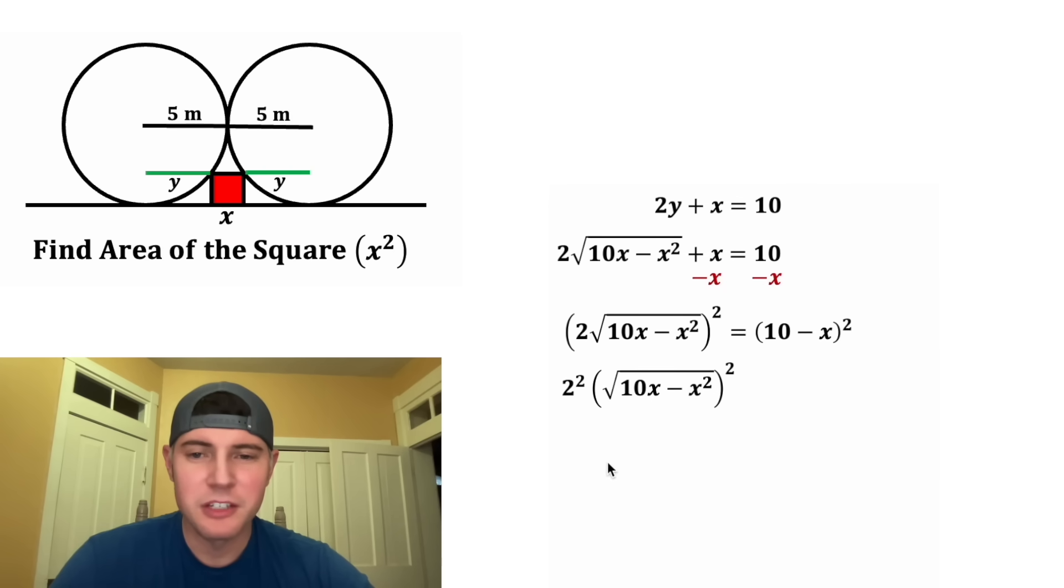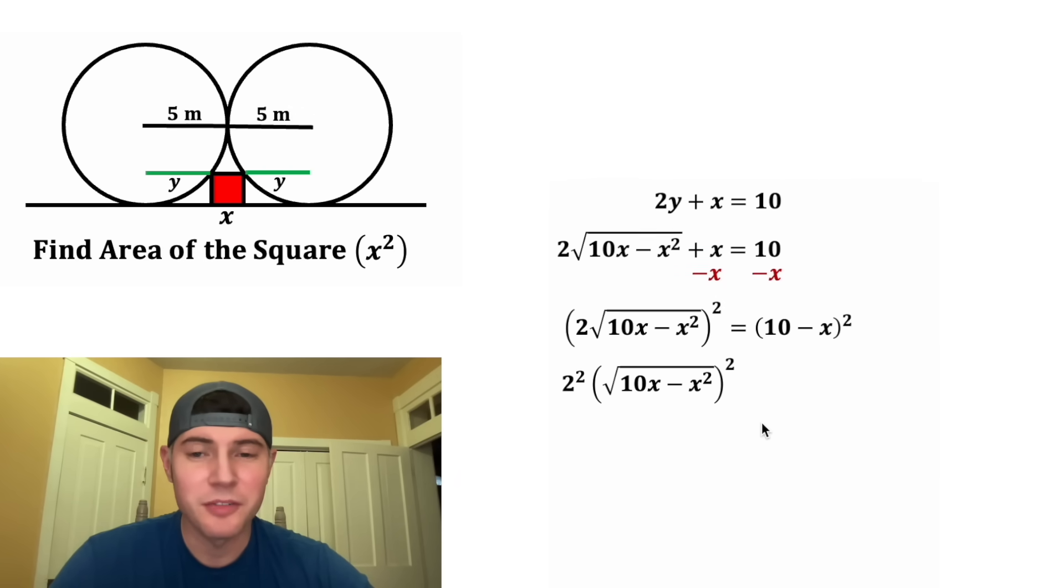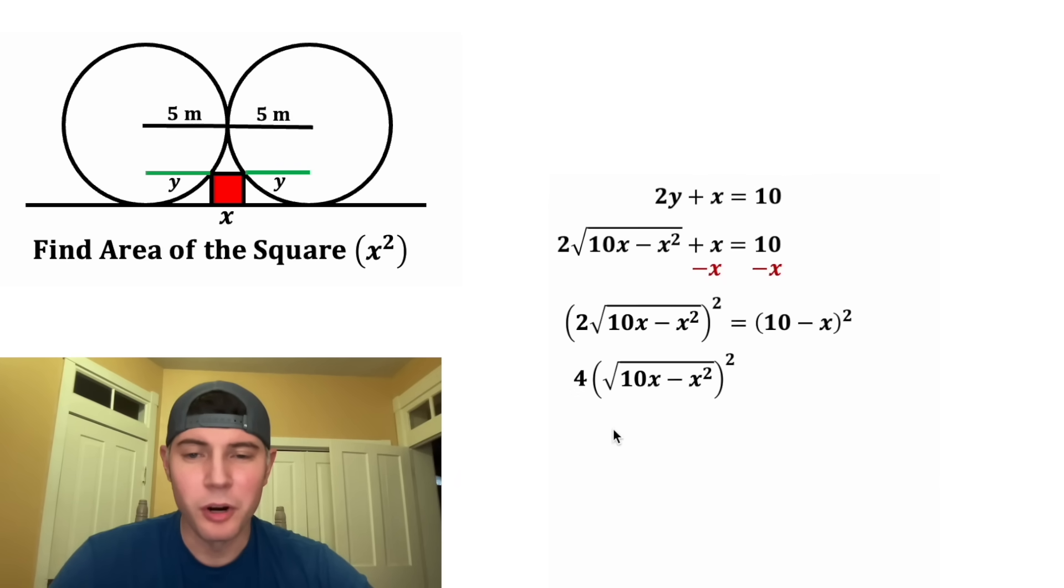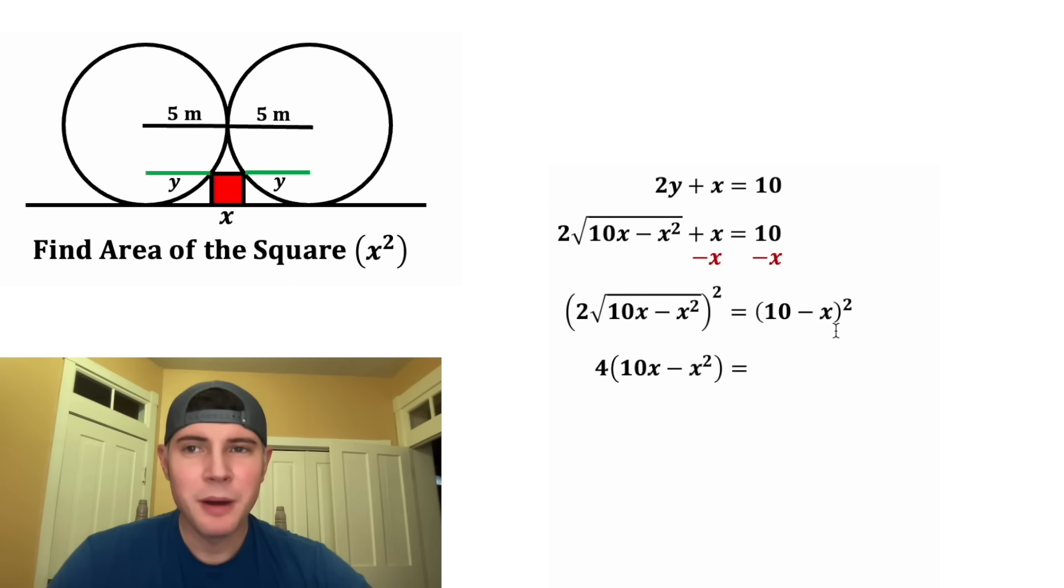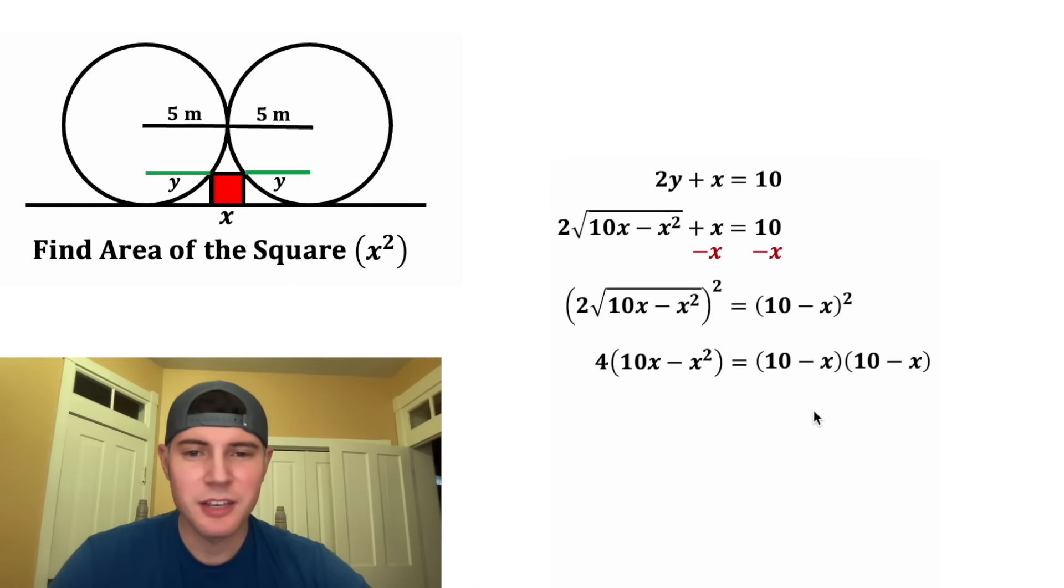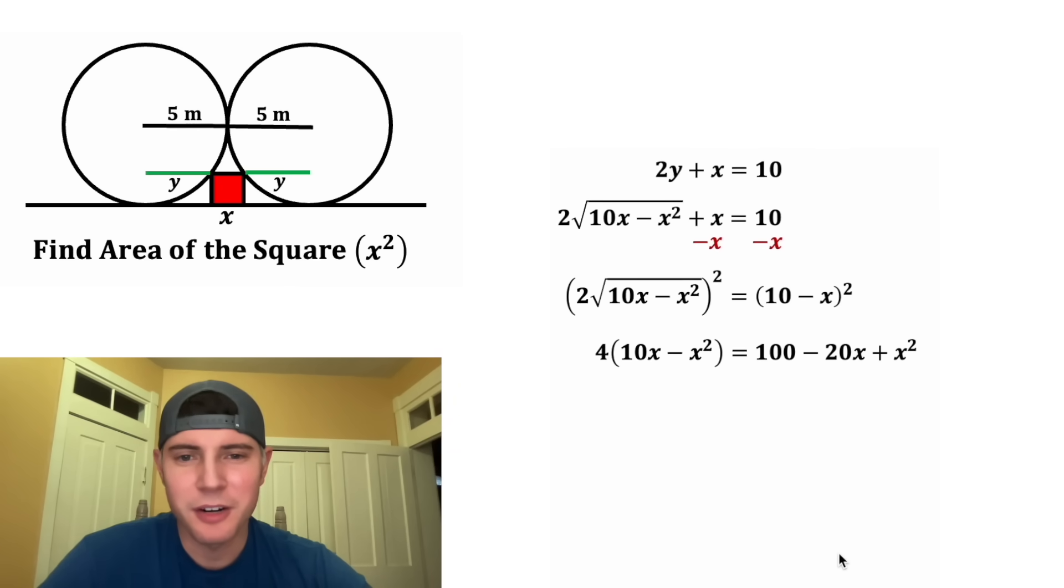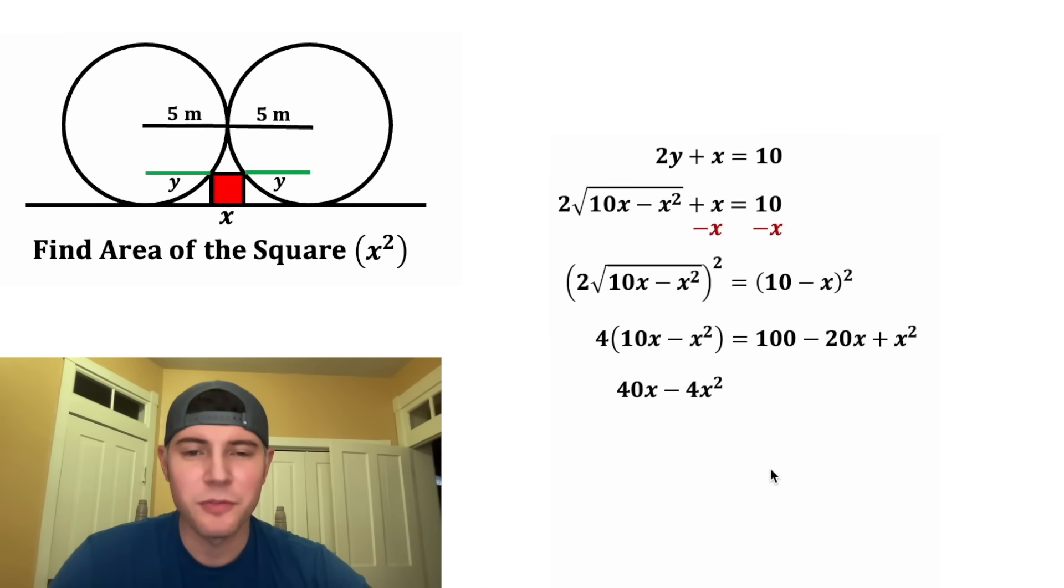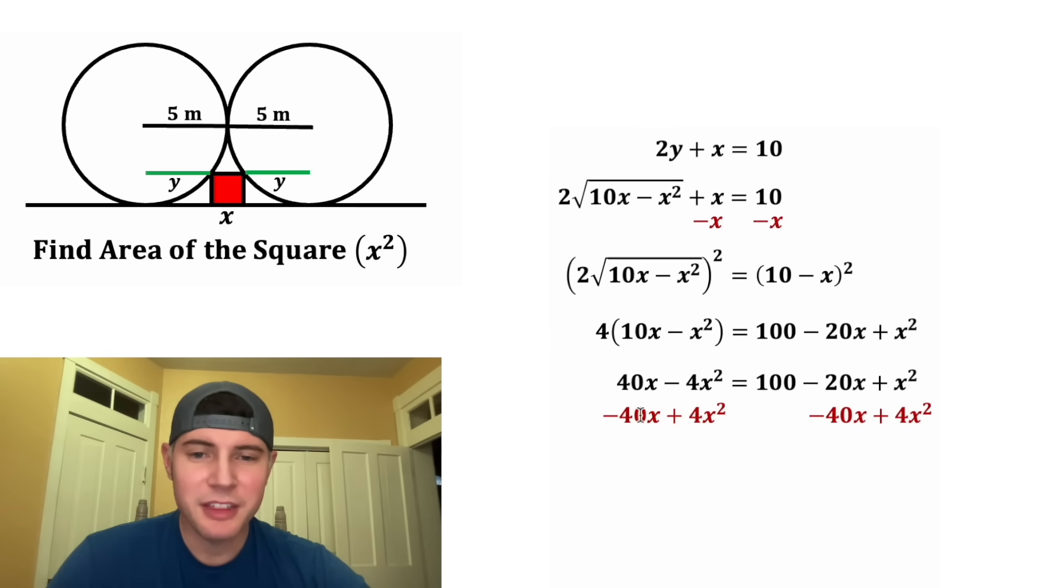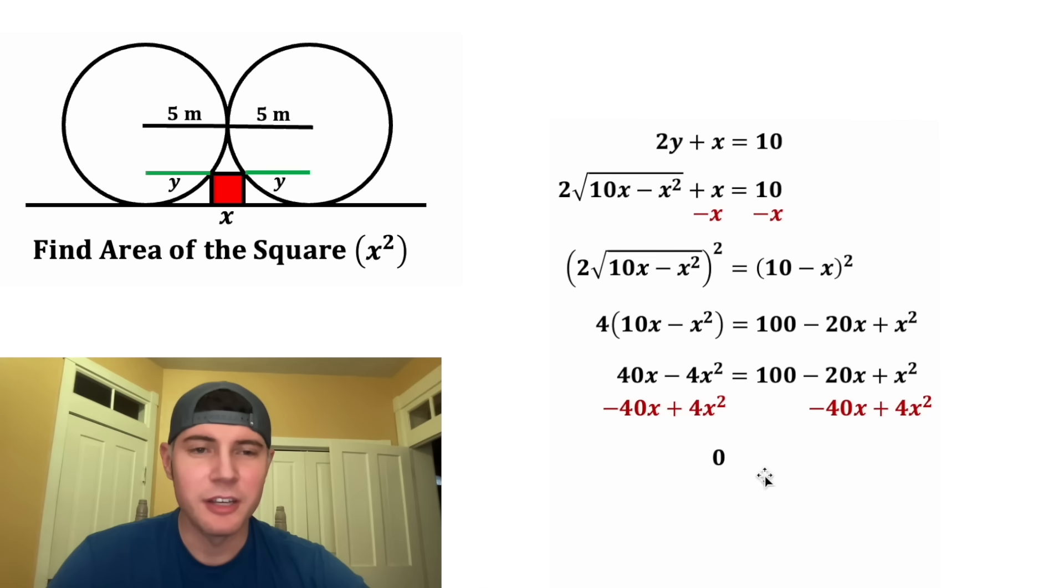This square will distribute to both of these, so we have two squared, and then we have this stuff squared. Two squared is equal to four, and this square root and this square are going to cancel each other out. And then 10 minus X squared means this times this, and it ends up being 100 minus 20X plus X squared. Then we can distribute this four. It'll give us 40X minus 4X squared. And then we can subtract this stuff from both sides, so we can set it all equal to zero.